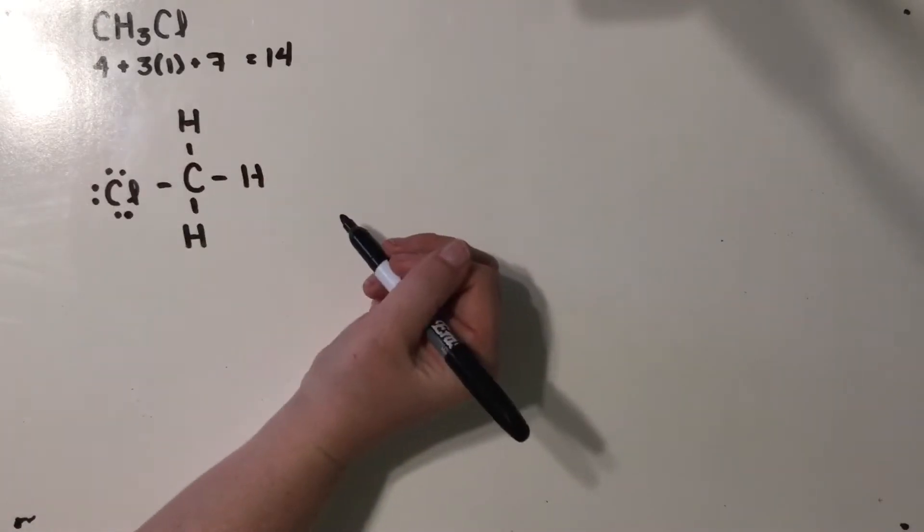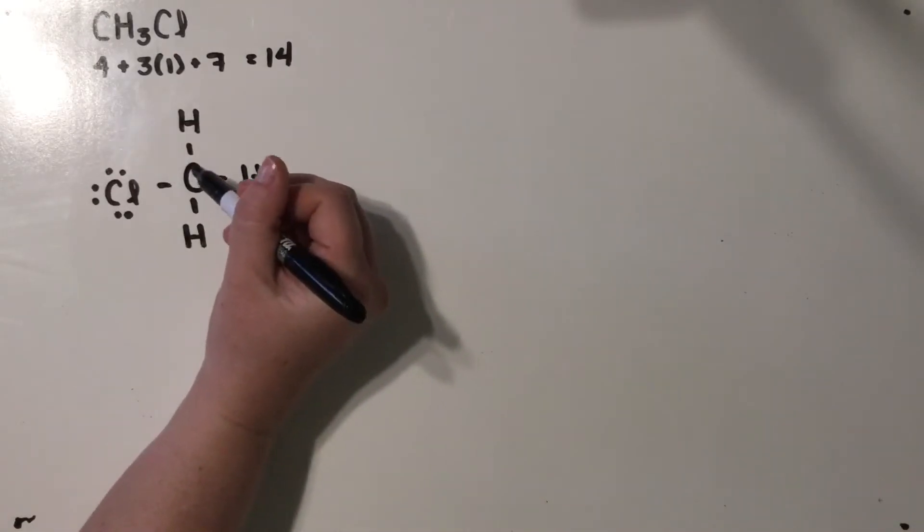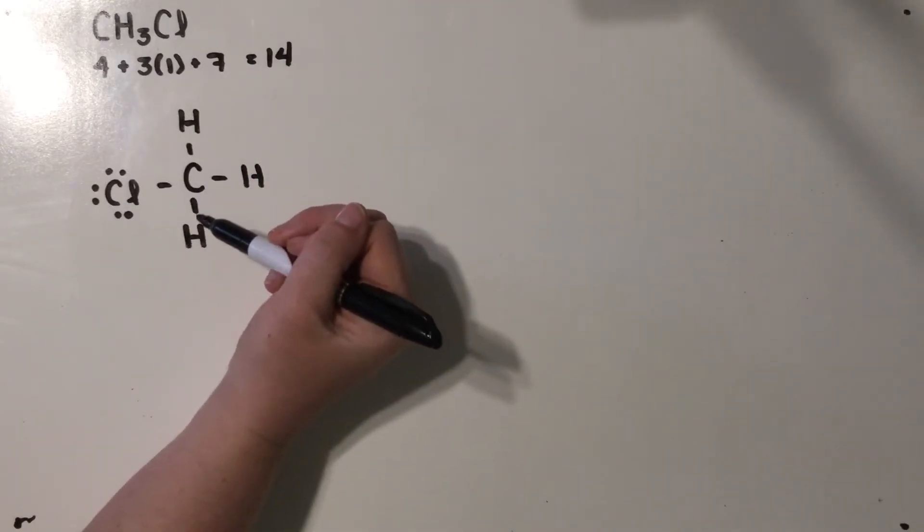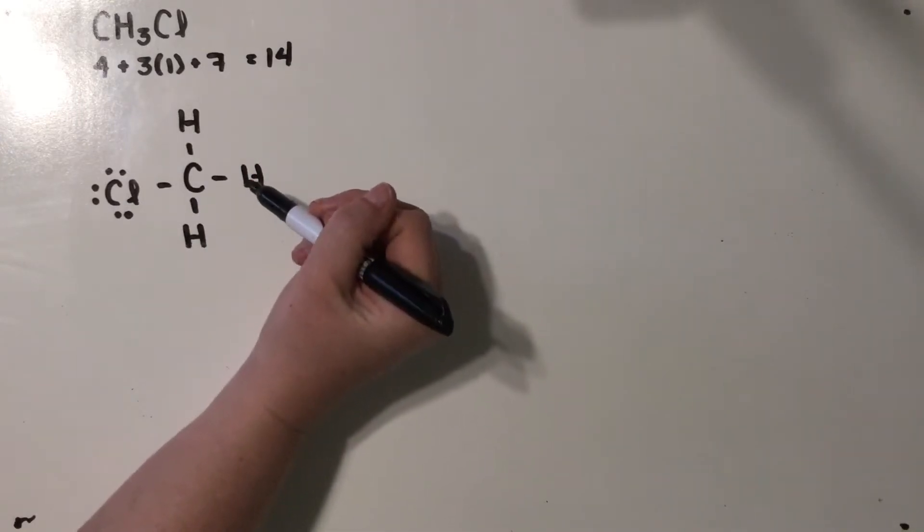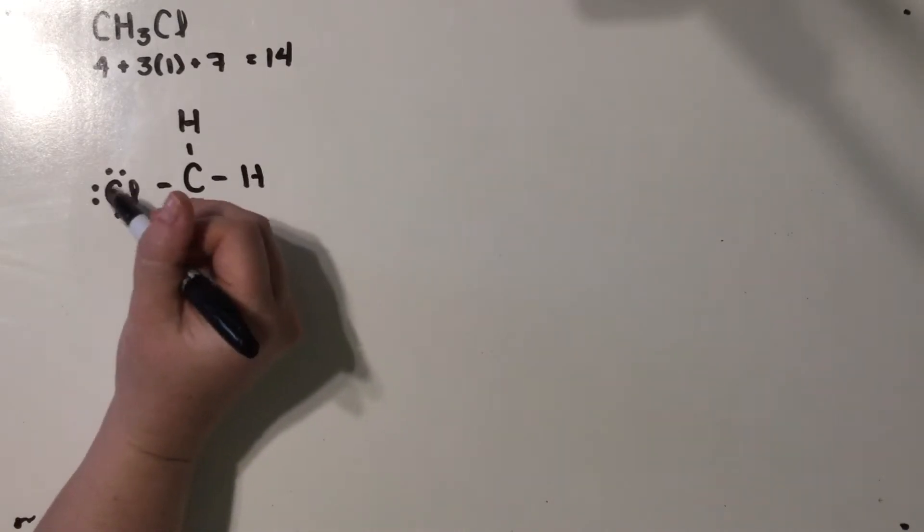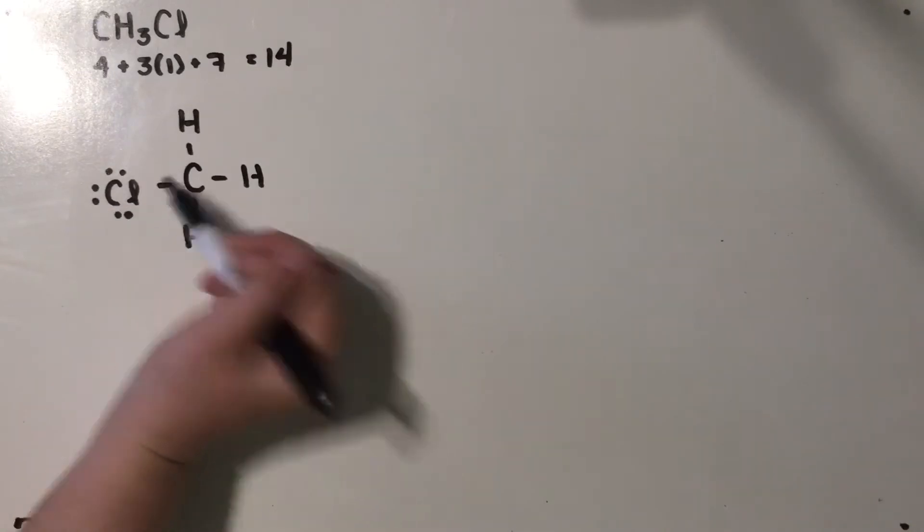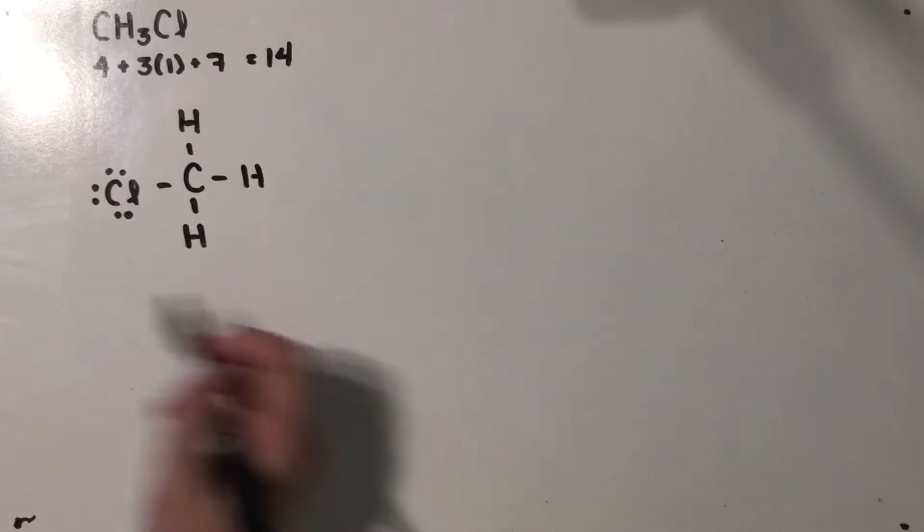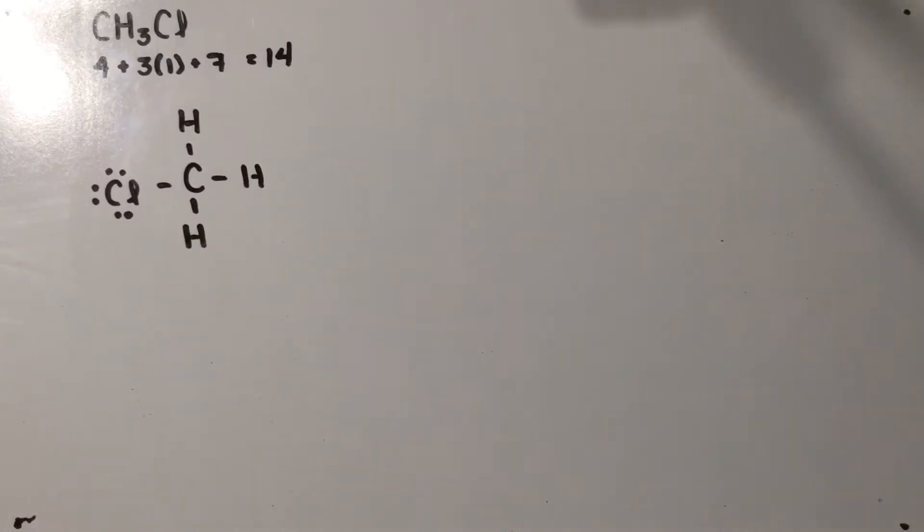If we checked our formal charges to see how this one looks, carbon starts with four valence electrons. It also has four bonds. Four minus four would give a zero formal charge. Hydrogen has one valence electron and one bond. Again, zero formal charge. And chlorine starts with seven lone pair electrons, plus one bond, also a zero formal charge. So this is really our best Lewis structure we can make.